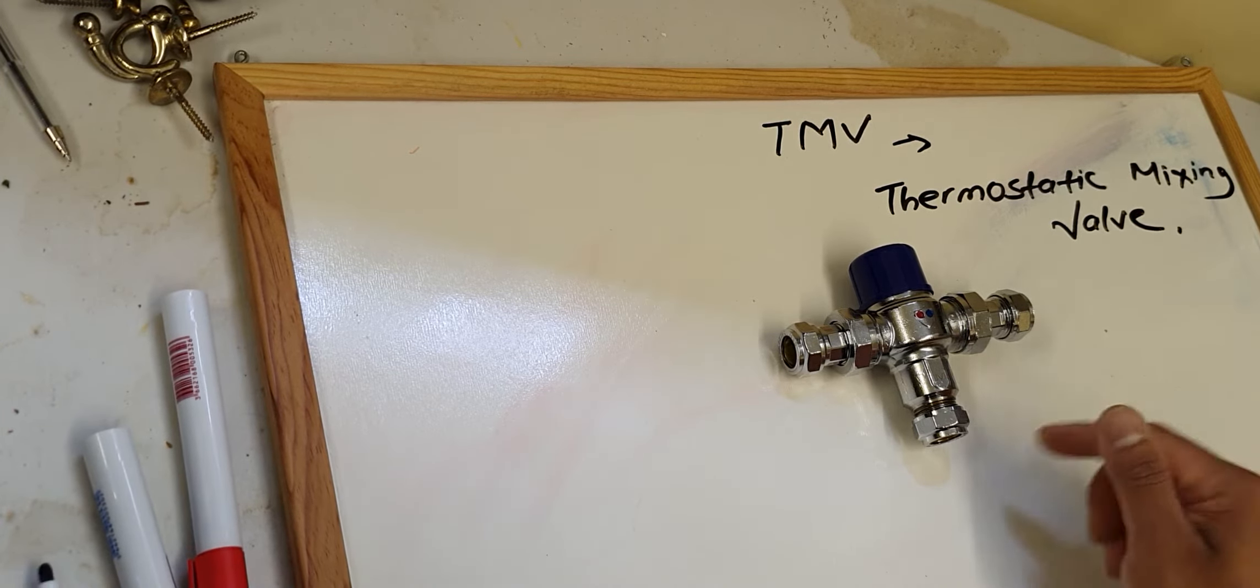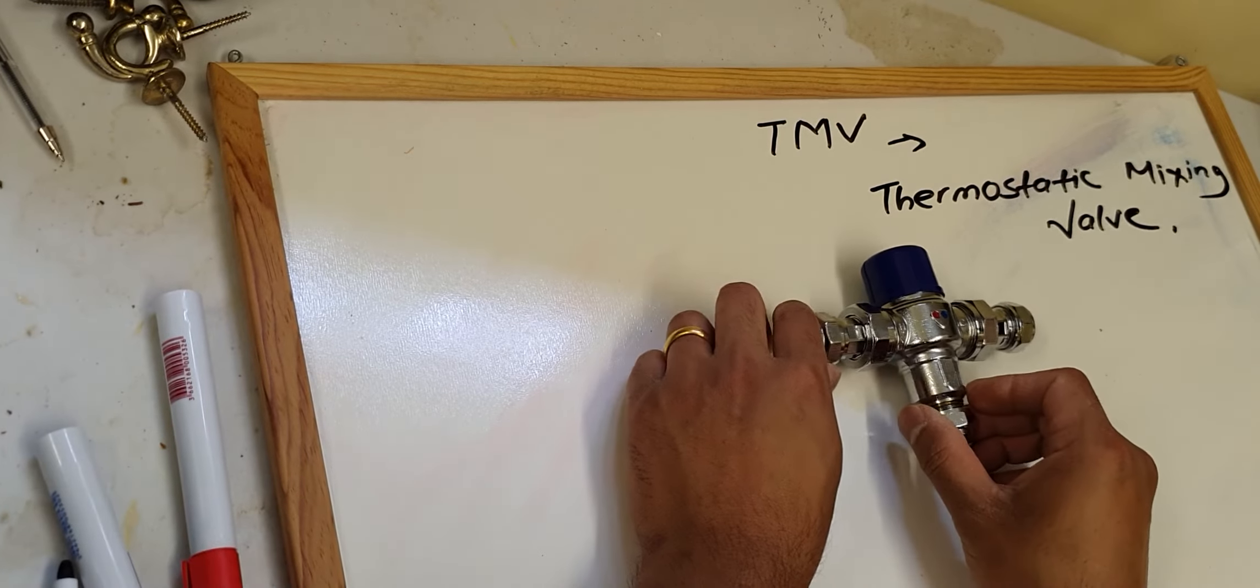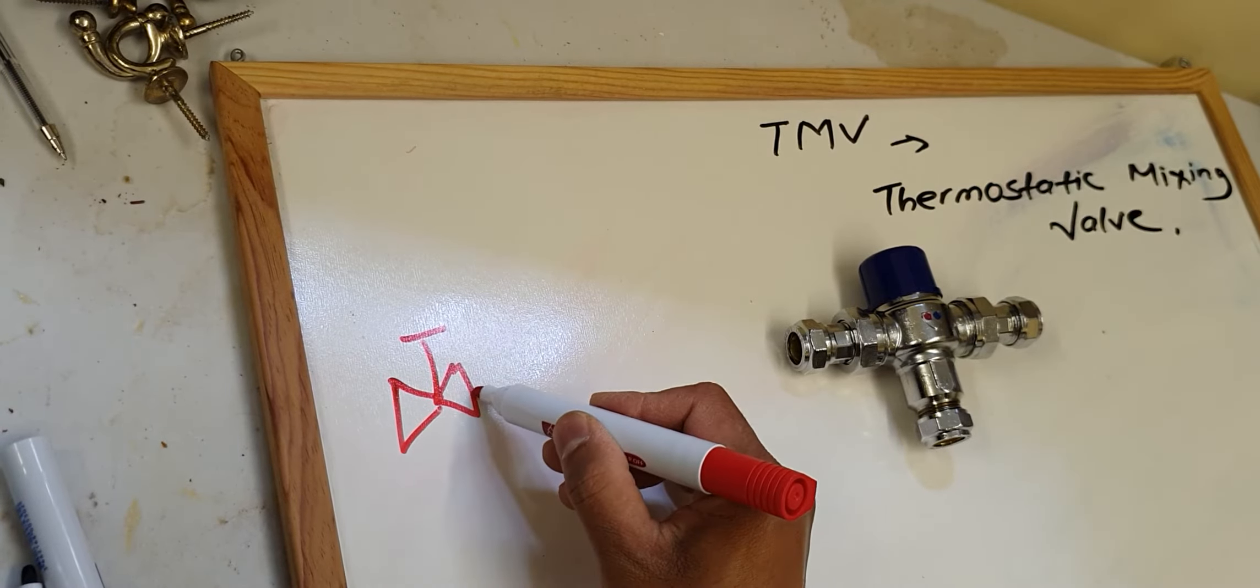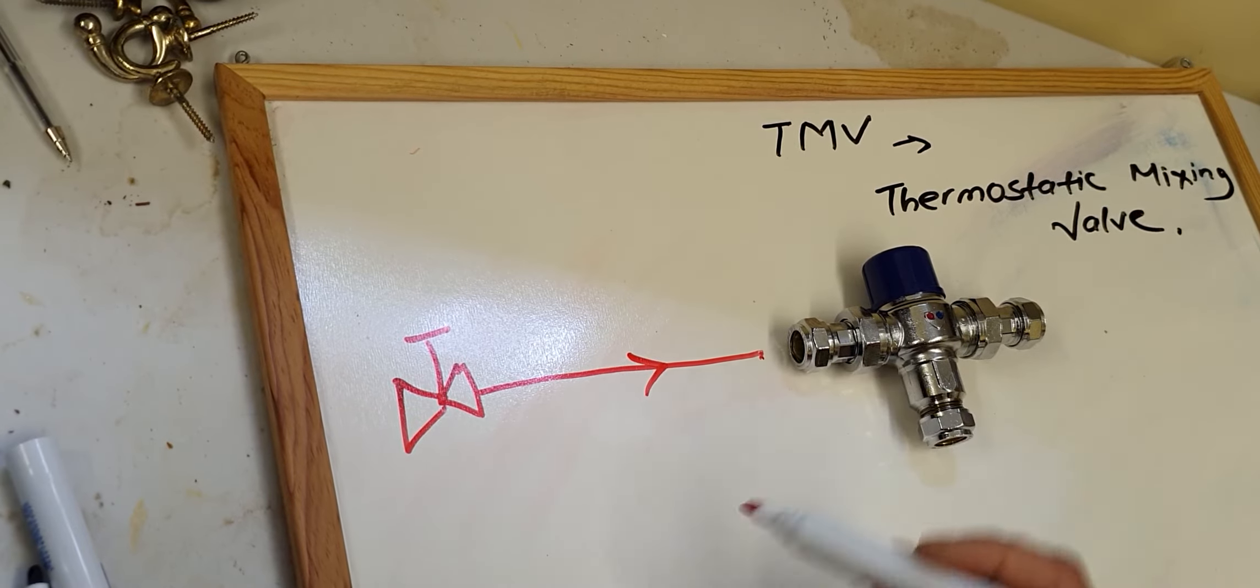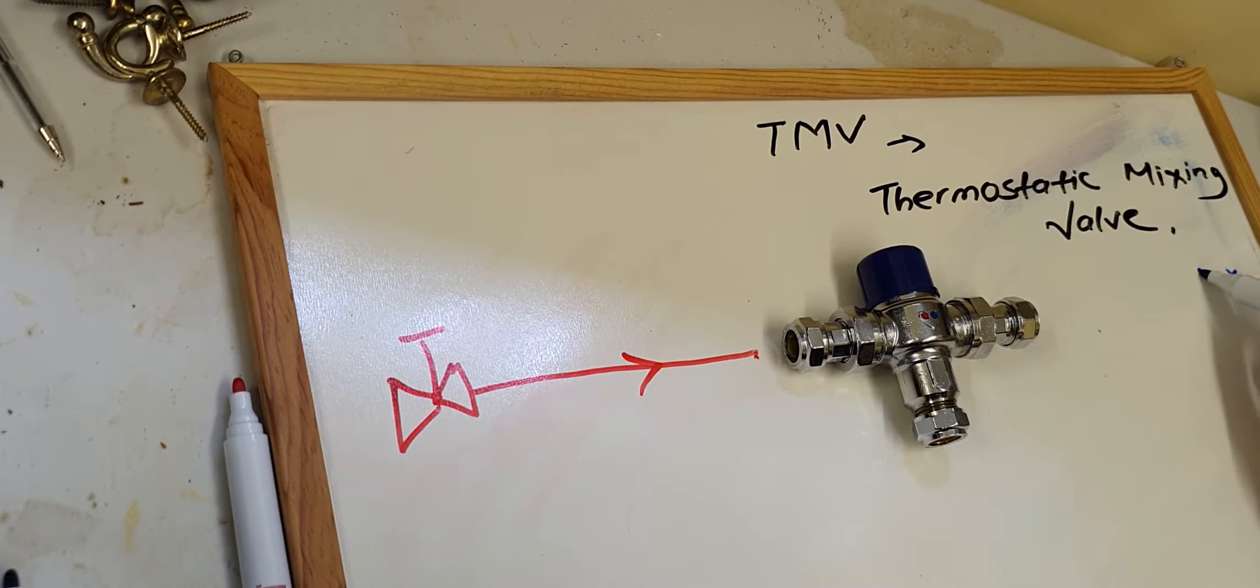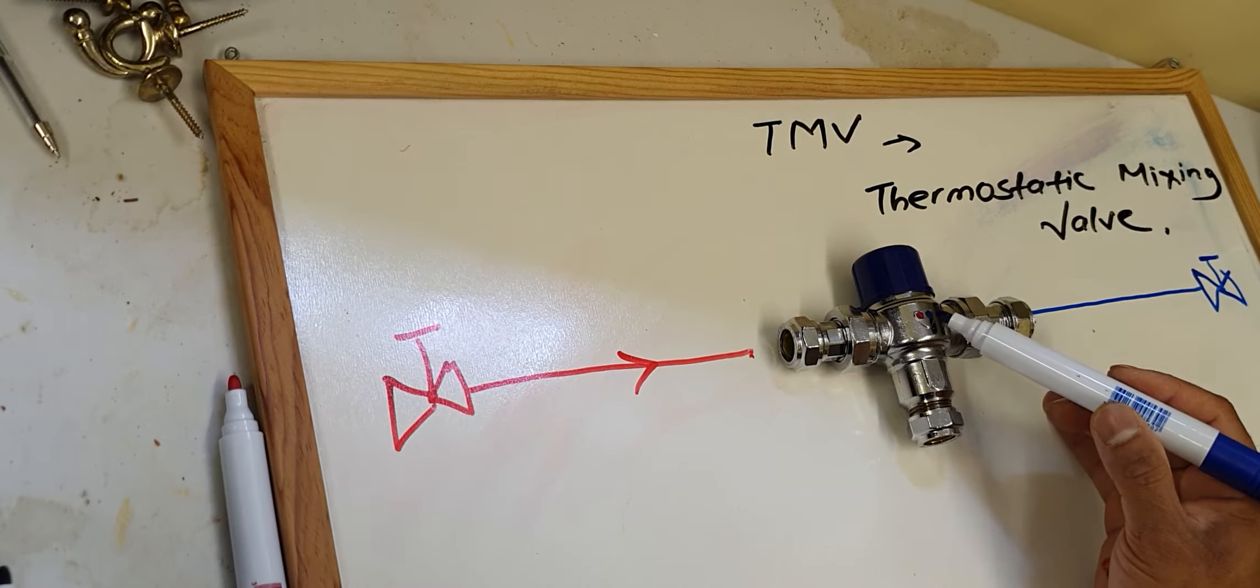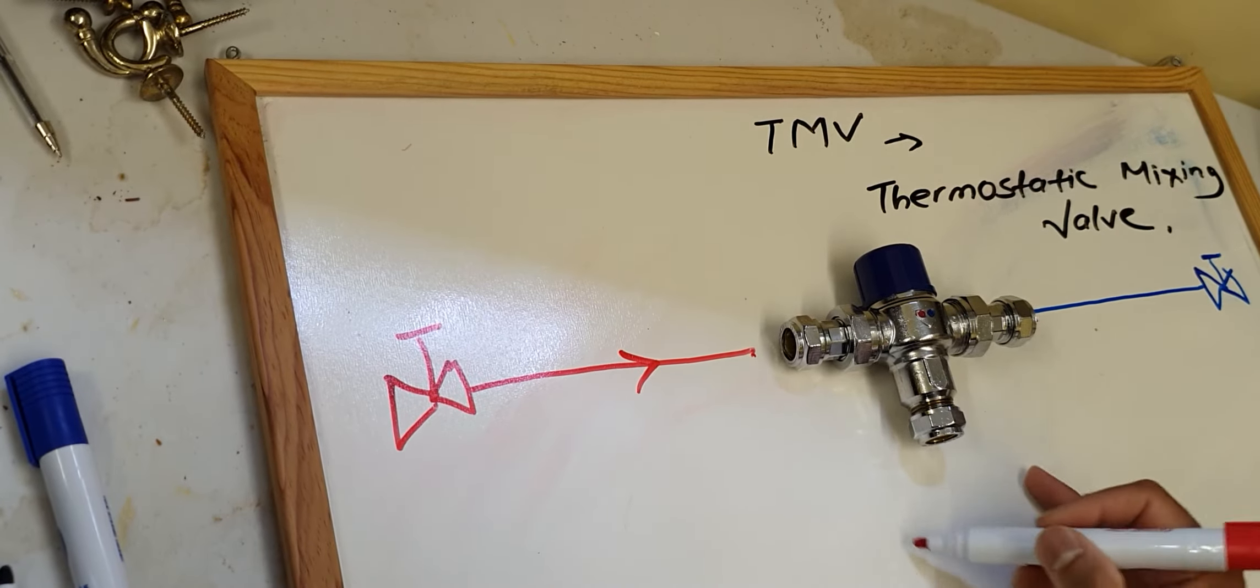I'll show you the rough diagram of how to install the TMV. This is the isolation ball valve and the hot water gets into the TMV from this side. Cold water to the TMV from this side where the blue mark is.